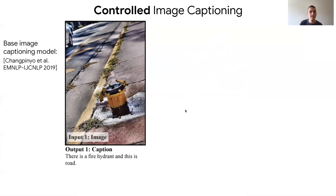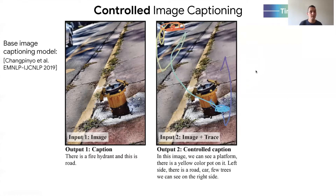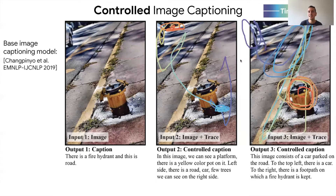We start from a state-of-the-art captioning model and train it on localized narratives data. On a given image it produces a description mentioning the fire hydrant but not the car in the background or the trees. The idea is that we can retrain this model to become conditional, so at test time we inject a trace specified by the user indicating which parts of the image they want described — useful for example for a visually impaired person. With the trace sweeping broadly over the image, the caption becomes much longer, describing the platform, the car, and the trees in the background. Interestingly, the same image with a different trace input leads to a different caption, showing it's truly controllable.